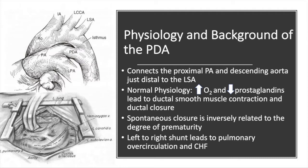Normal physiology during birth leads to increased oxygen tension and decreased prostaglandin from the placenta, along with increased prostaglandin metabolism by the lungs, which ultimately leads to ductal smooth muscle contraction. In premature neonates, this mechanism is often underdeveloped, which leads to patency of the ductus arteriosus. The incidence increases with the increasing degree of prematurity.